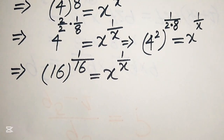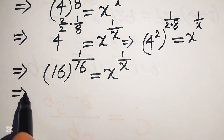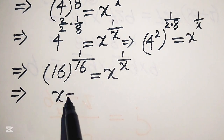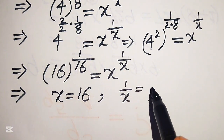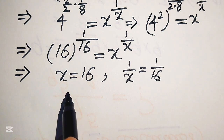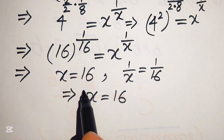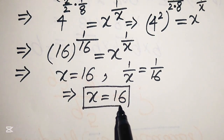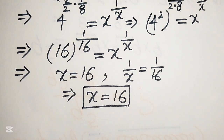Finally, on both sides the exponent is the reciprocal of its base. So now we compare both sides: comparing the bases gives x equals 16, and comparing the exponents gives 1 over x equals 1 over 16. From both cases we easily get x equals 16. This is the final answer. Now in the next step we need to verify the value of x.